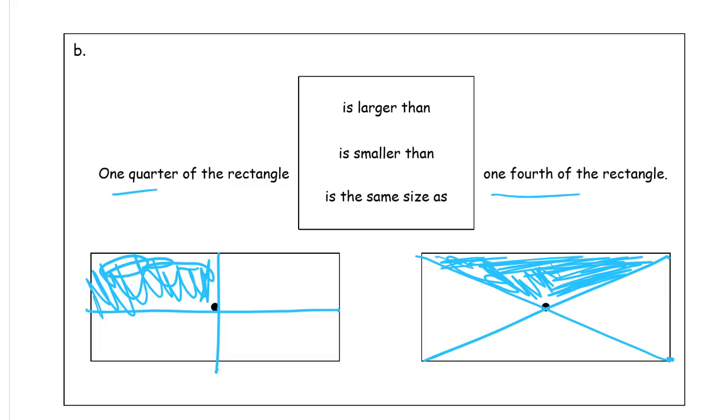You could have, you could do it, I just thought it would be fun to look at them that way. But they are both, that's what, this is one out of four equal pieces, and this is one out of four equal pieces. And it's the same rectangle.